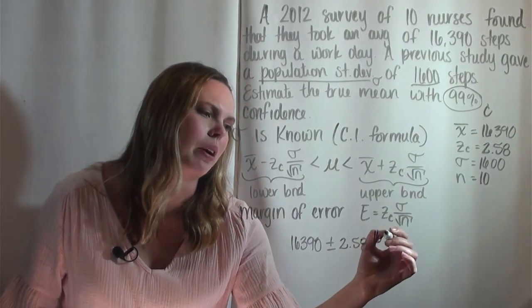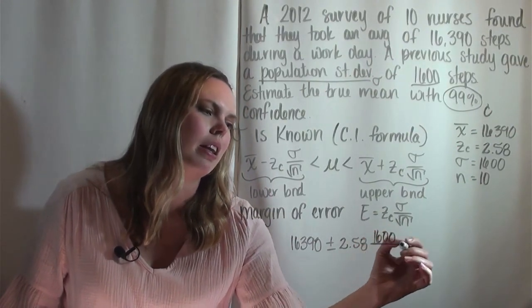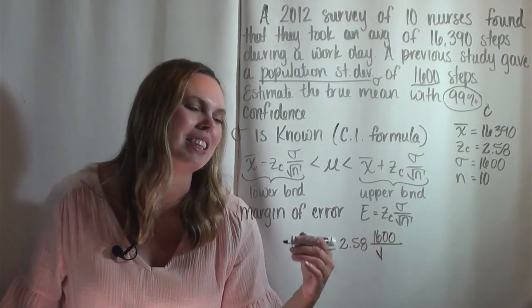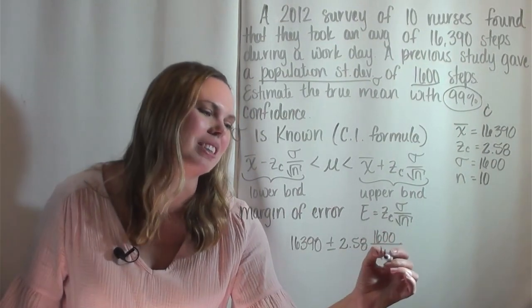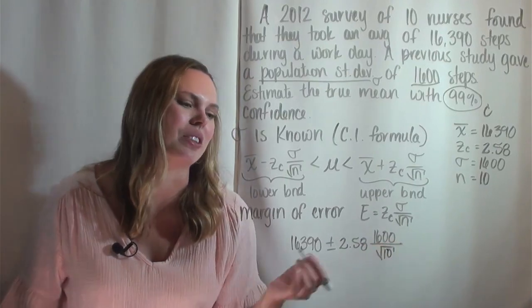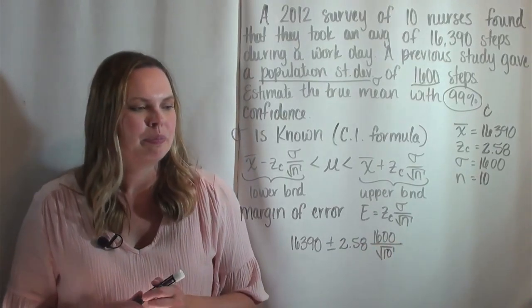So here's x̄ plus or minus z_c and then sigma over the square root of n. You'll also remember in the central limit theorem that the standard deviation of the sample means is sigma over the square root of n. So this is again just building on that central limit theorem.